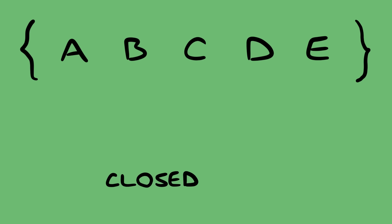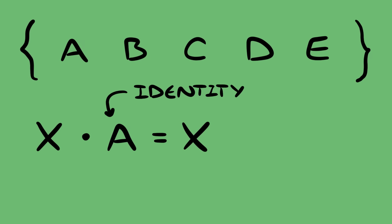Another thing to notice is that anything composed with A, a rotation of zero degrees, is itself. So we call A the identity element.